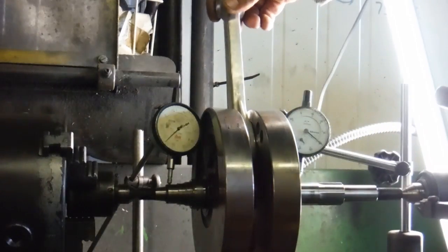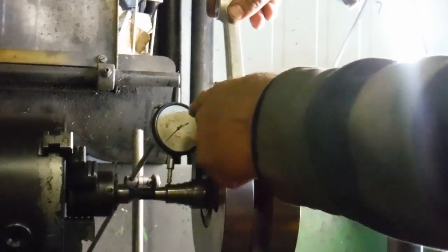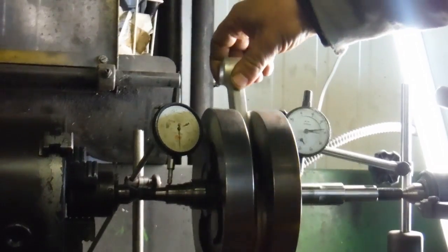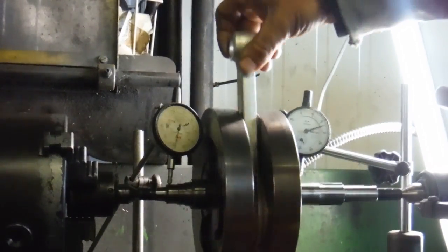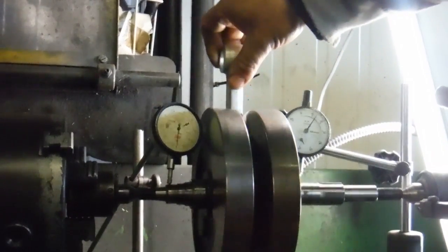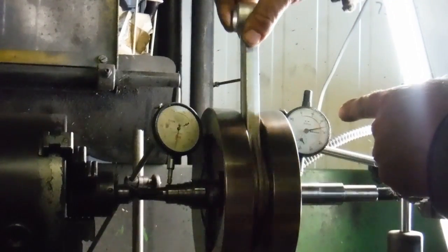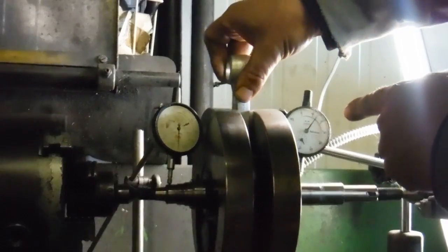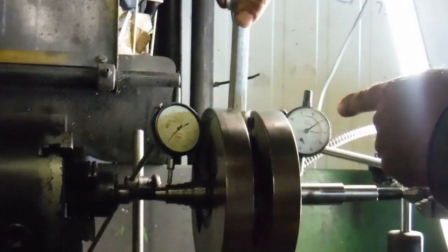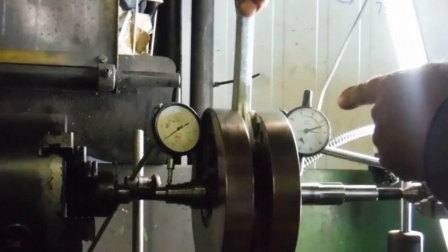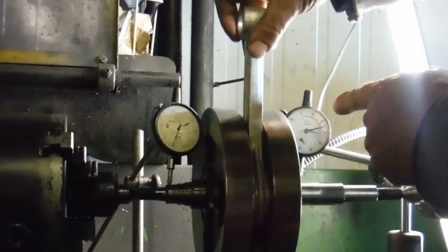If you give this a spin, hopefully the needles on the dials will be visible. I've got about 0.15mm on that one, which is about six to seven thousandths of an inch.